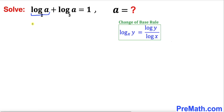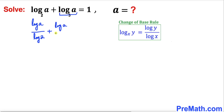So the first term can be written as log of a divided by log of 2. Applying the rule to the second term, we get log of a divided by log of 3. So our equation becomes: log a over log 2 plus log a over log 3 equals 1.